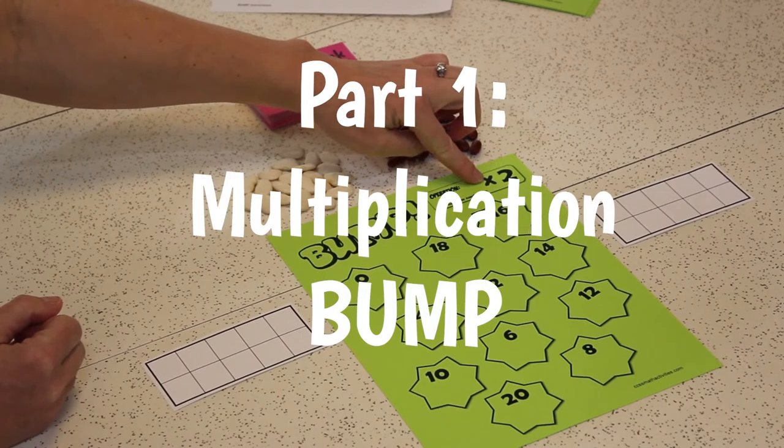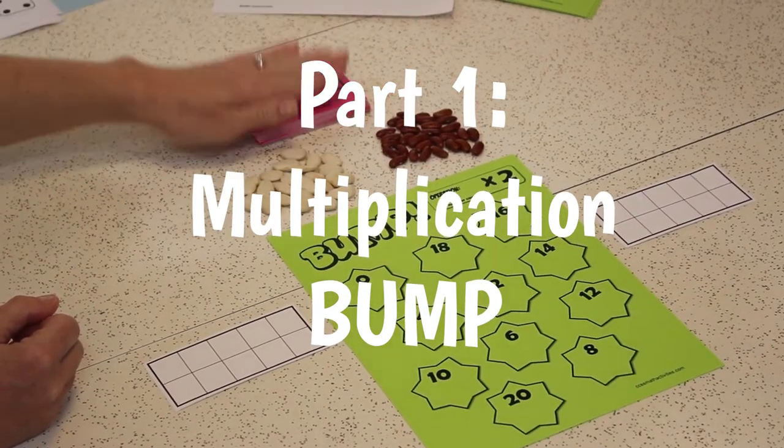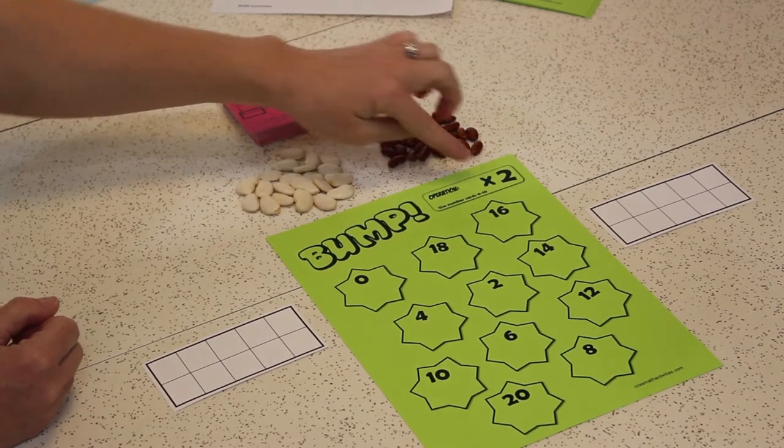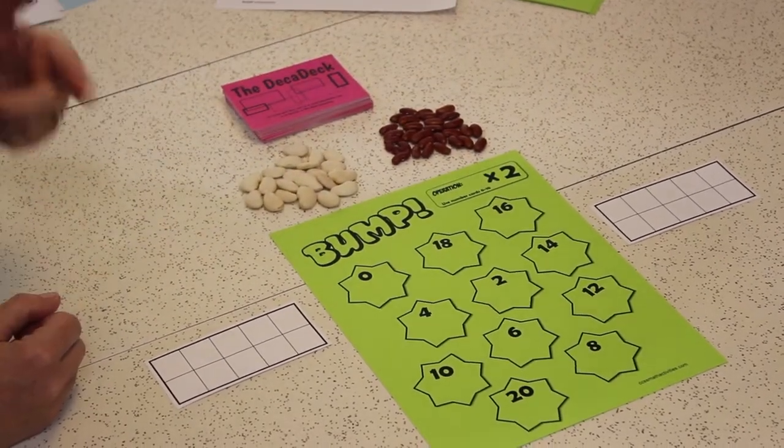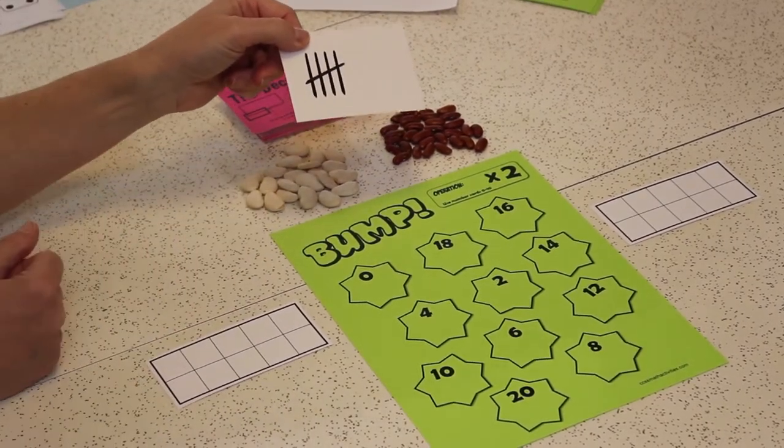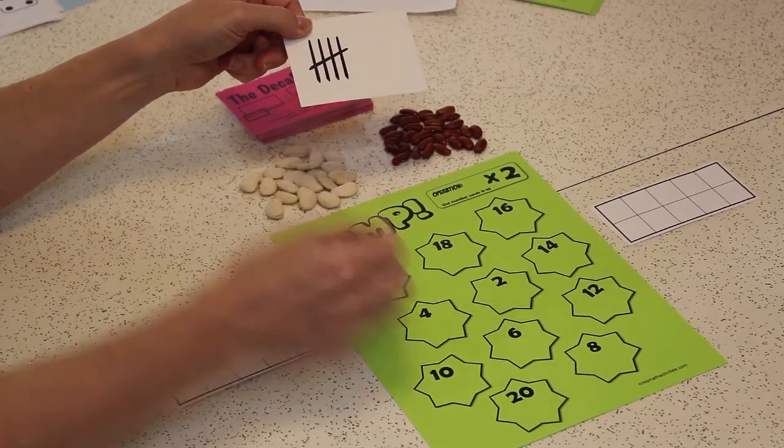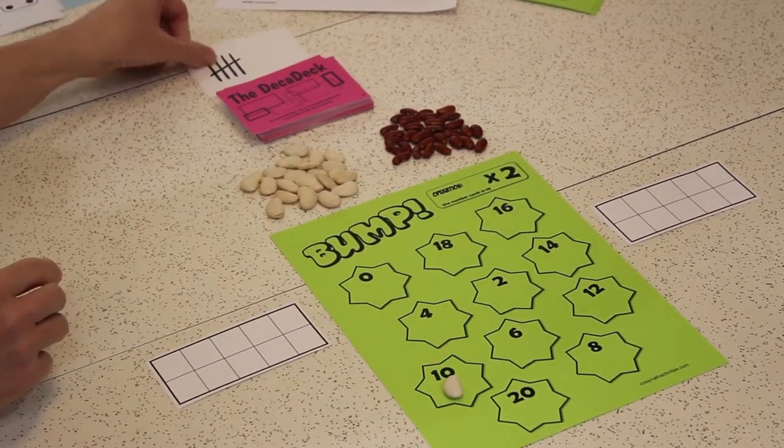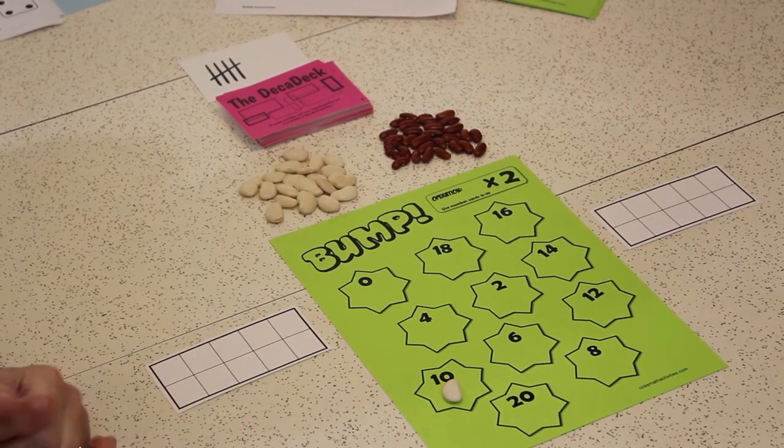We're playing the times 2 Bump, and the way this goes is we'll turn over one Decadec card and multiply it by 2, and we'll just talk and go. Henry, I will start. I got a 5. I have to say the equation. 5 times 2 is 10. So I take my marker and I put it on a 10. I have to say the equation, or my partner can actually steal the bean from me.